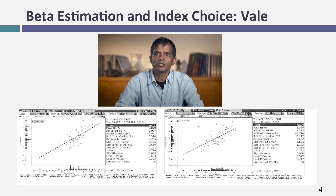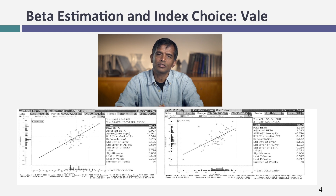To show you how much of a difference it makes as to what index you choose, I took Vale, a Brazilian company, and ran two different regressions. One was Vale against the Bovespa — the local listing against the Brazilian equity index. The other is Vale's ADR, which is a US listing against the S&P 500. I get very different estimates of beta, intercept, and R-squared.